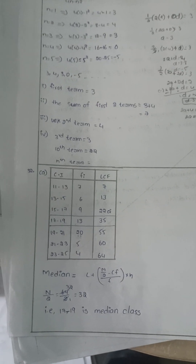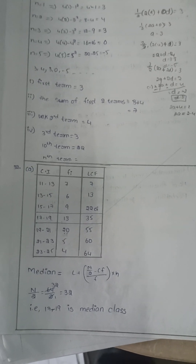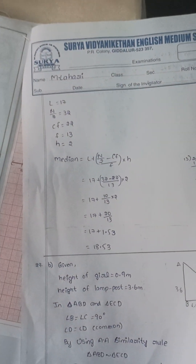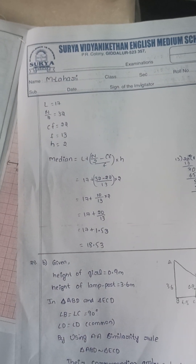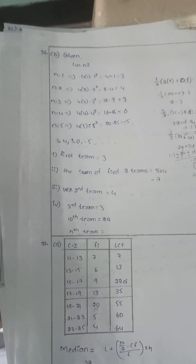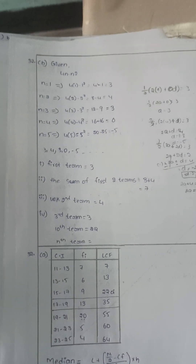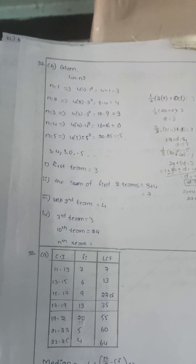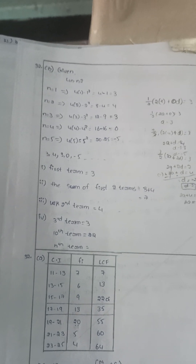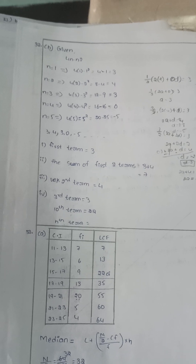Question 32a involves finding the median. Question 32b: given the pattern 4n − n², find the first term, the sum of the first two terms, the second term, and the third term.